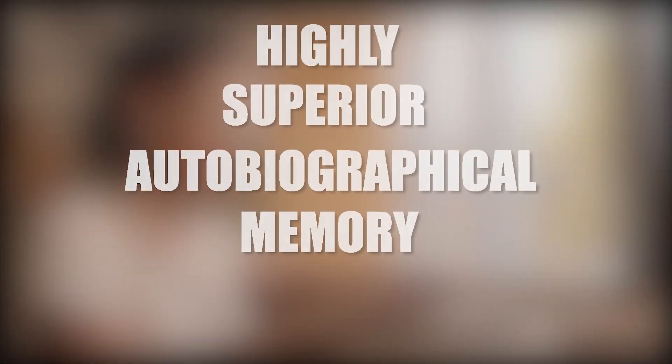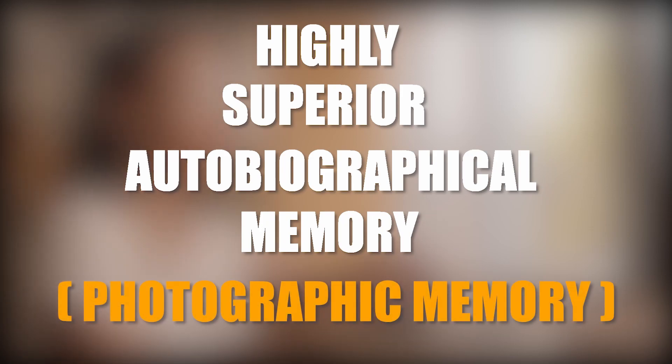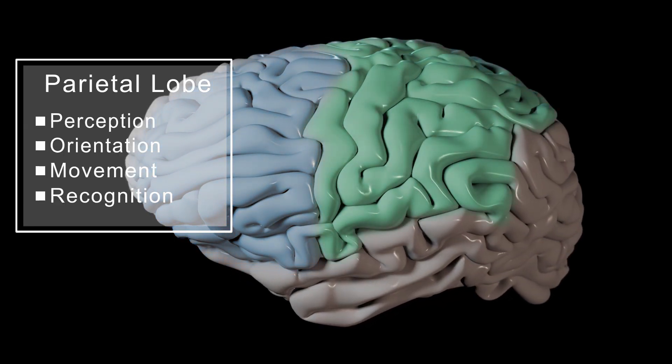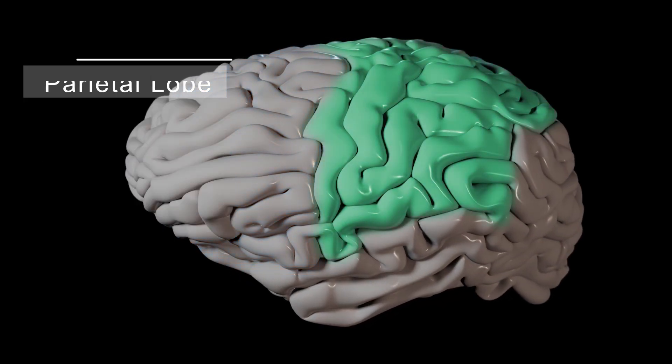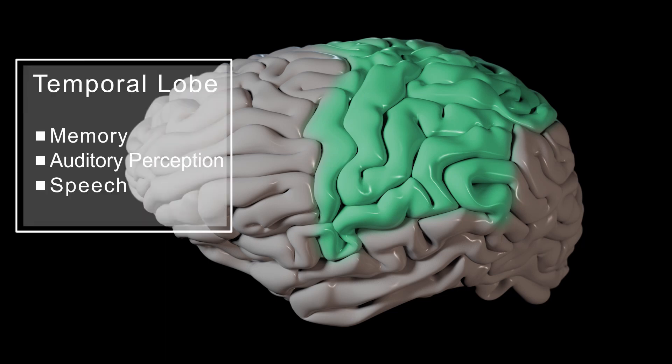One study found that people with such heightened episodic memory, a condition termed highly superior autobiographical memory, commonly called photographic memory, do have enlarged areas in the temporal and parietal lobes, both of which are linked to memory storage and retrieval.